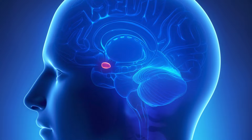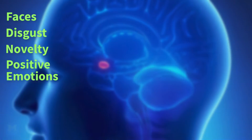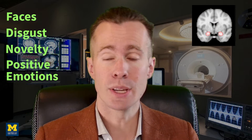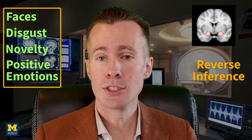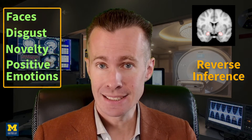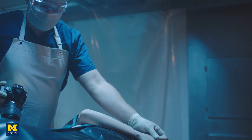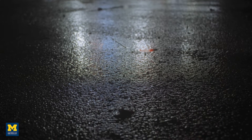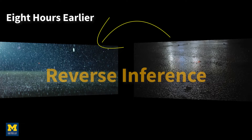It turns out that the amygdala is responsive to a wide variety of stimuli, including faces, disgust, novelty, and even positive emotions. By assuming that one of these caused the amygdala to light up, we are using a technique called reverse inference — that is, we see a result or an end state and we infer the cause from the data. For example, a coroner performs an autopsy and makes an educated guess about the cause of death, or you wake up to find the ground outside is wet and conclude it must have rained last night. In both cases you start at the end and go back in time to the beginning — hence the name reverse inference.